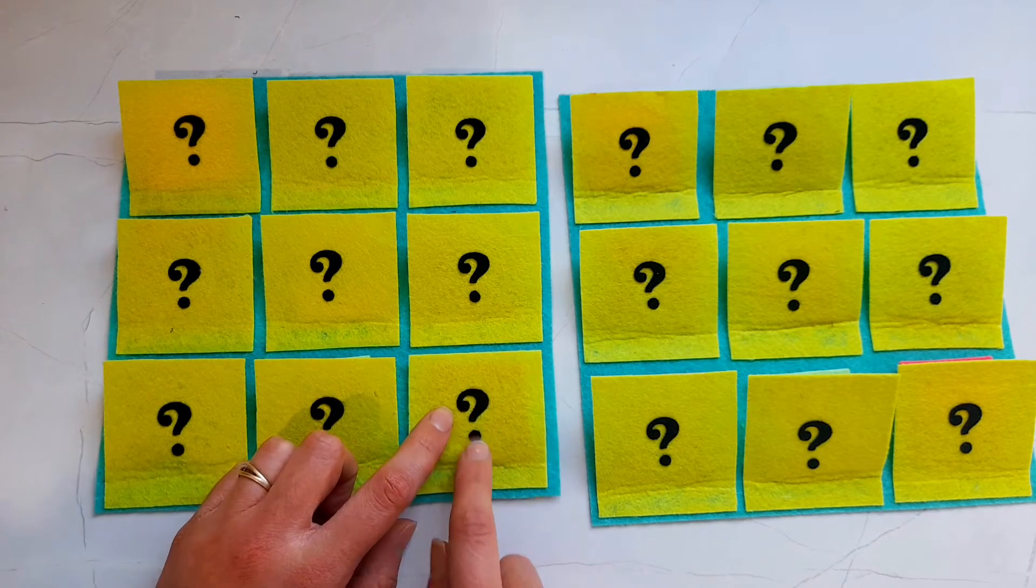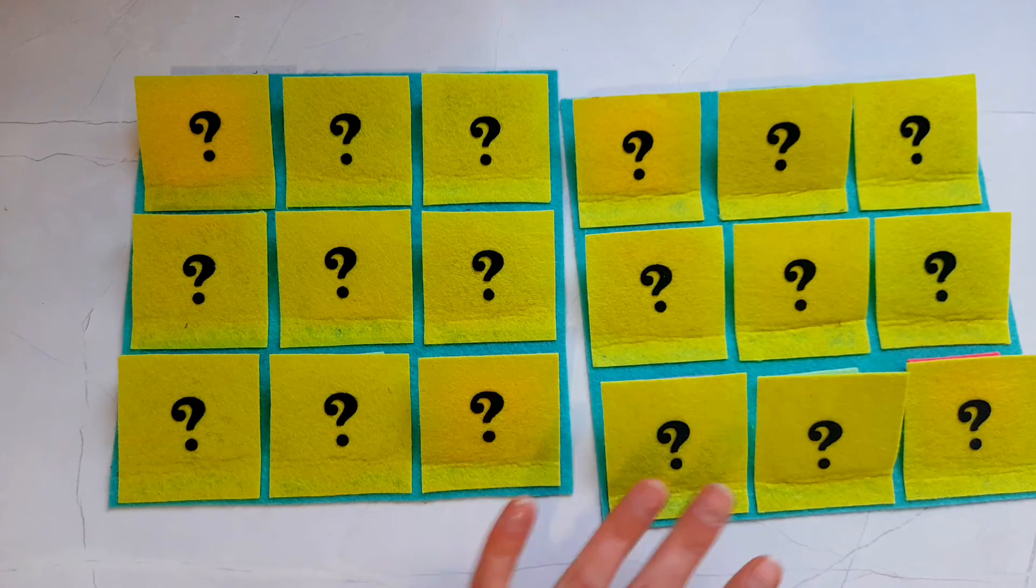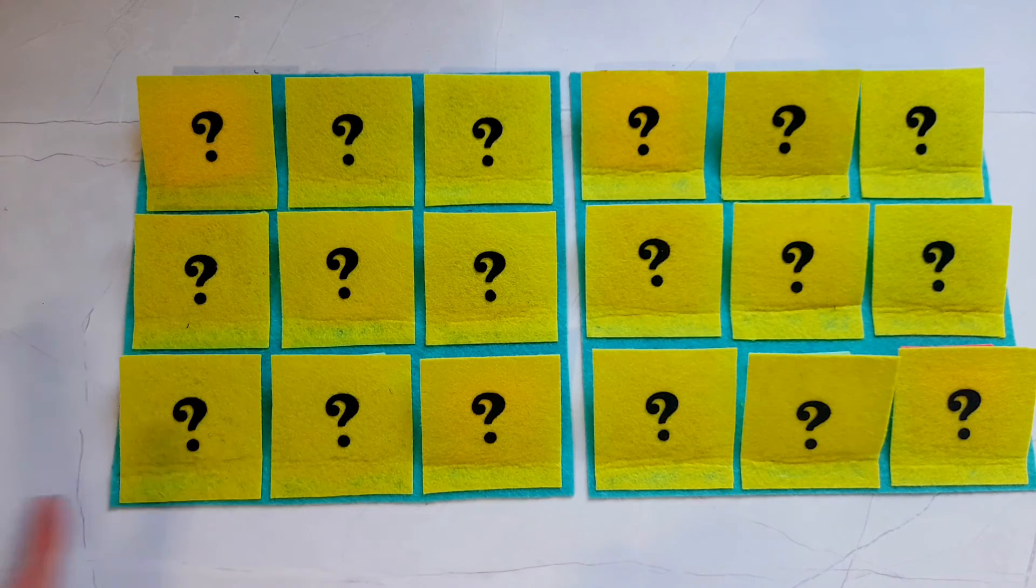Another cute little detail I added were these little felt iron-on question marks. If you don't have them, you could just leave those flaps blank or you could draw question marks on them if you wanted to.